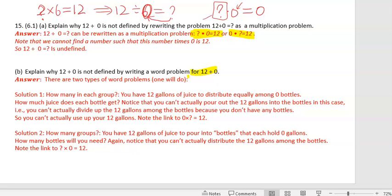So that's why it doesn't matter how many groups you have. If every group has zero, the answer has to be zero. So there's not really an answer for this question, something times zero to get 12. So there's no answer.